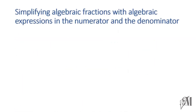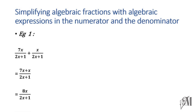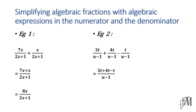Now, simplifying algebraic fractions with algebraic expressions in both the numerator and the denominator. In the first example, (2x + 1) is the common denominator, so just add 7x plus x to get 8x over (2x + 1). In the next example, the denominator is (u − 1): 3t plus 4t is 7t, minus t gives 6t over (u − 1).